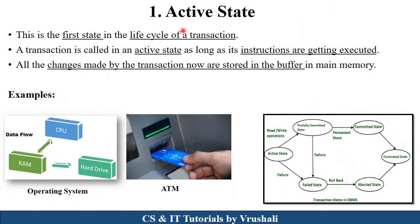The first state is the Active State — this is the first state in the life cycle of a transaction. It simply means instructions are ready for execution or are currently being executed. For example, in an operating system, when the CPU wants to perform read/write operations on the hard drive it uses RAM as a buffer. In an ATM example, inserting your ATM card is the active state. When performing SQL practicals, connecting to the database is also the active state.